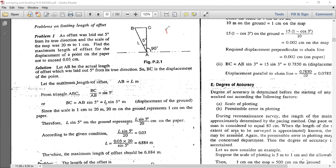1 centimeter equal to 20 meters. Find the maximum length of the object for the displacement of point on paper not exceeding 0.03 centimeter. Displacement 0.03 centimeter.